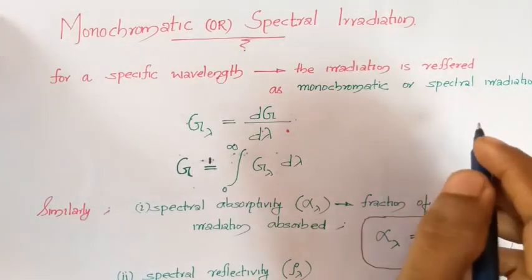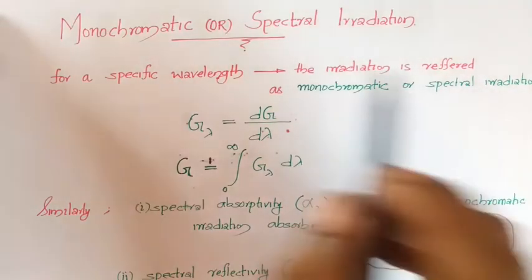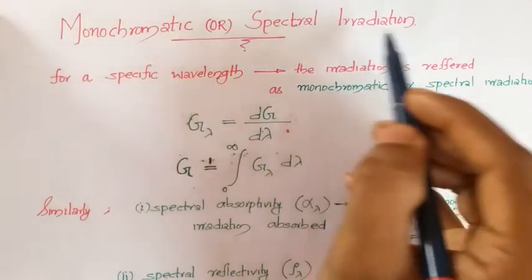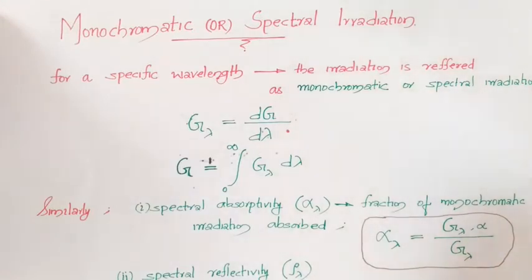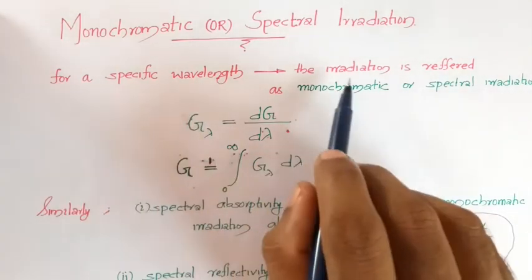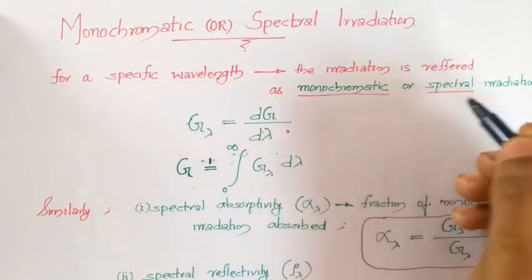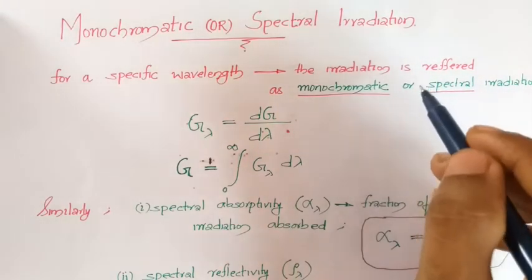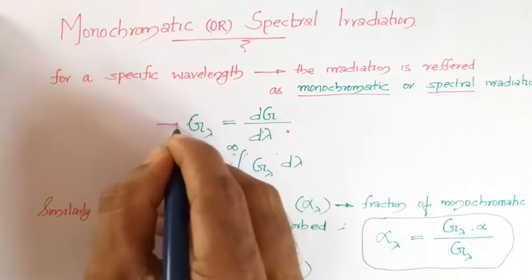We have discussed irradiation covering the entire wavelength from all directions. Now we will talk about monochromatic or spectral irradiation — that is, if you are calculating the total radiation energy incident for a particular wavelength, say one micrometer, how much radiation energy is incident for that specific wavelength. For a specific wavelength, irradiation is referred to as monochromatic or spectral irradiation.